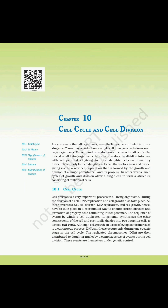Chapter 10: Cell Cycle and Cell Division. All organisms, even the largest, start their life from a single cell. Growth and reproduction are characteristics of cells and indeed of all living organisms. All cells reproduce by dividing into two.